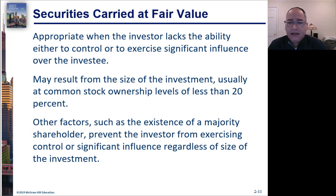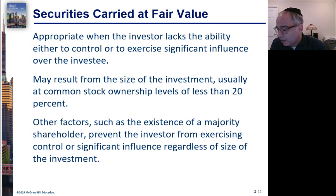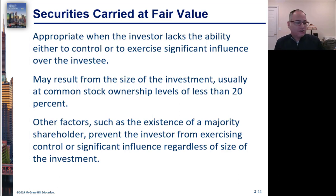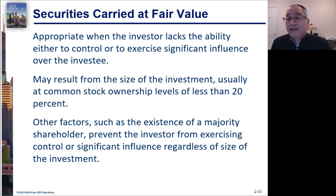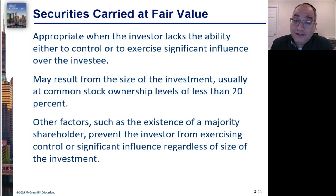The 20 percent threshold is approximate — it could be more or less. What's critical is that the company doesn't have the ability to influence dividends or operations. For example, if you hold 40 percent but there's a majority shareholder holding 60 percent, you have no say in anything. You're just along for the ride while the majority shareholder makes all the decisions — you're a non-controlling interest with no significant influence.